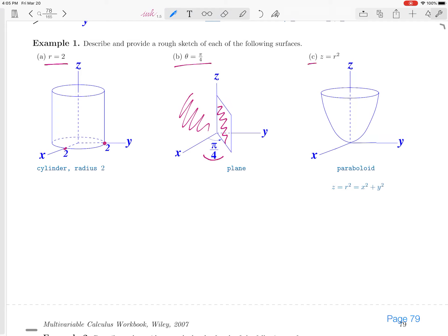In part c, we are looking at z equals r squared. And there it's helpful to remember that in cylindrical coordinates, r squared is equal to x squared plus y squared.